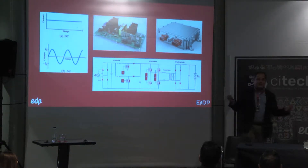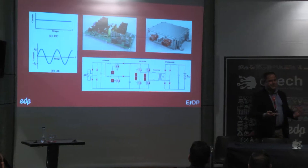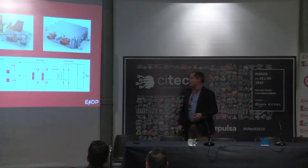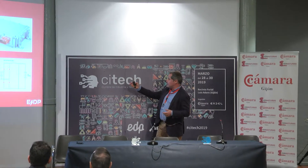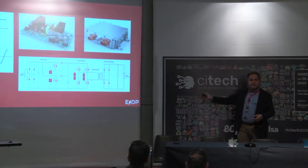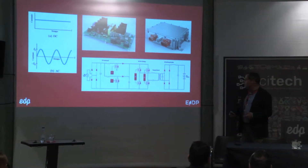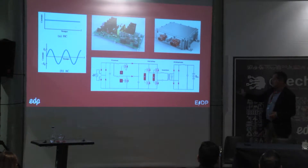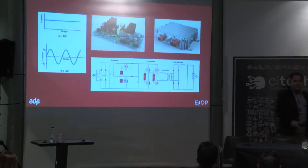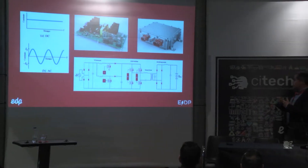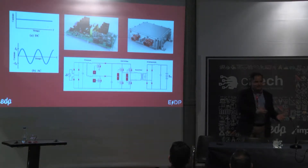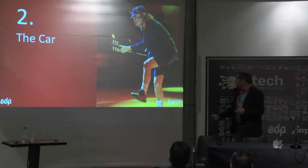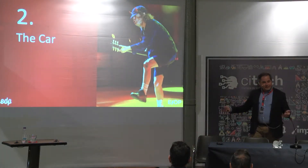Edison y Tesla los dos tenían razón y los dos convergen ahora de una manera muy importante en el coche eléctrico. En esta imagen vemos un rectificador de un coche real: circuitos electrónicos, tarjetas electrónicas, electrónica de potencia. Vemos rectificadores, filtros y esa serie de elementos que nos permiten pasar de corriente alterna a corriente continua, AC, DC.